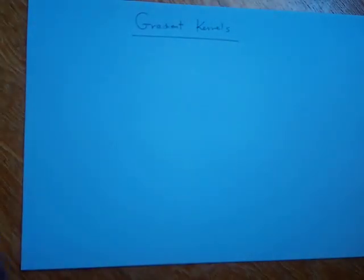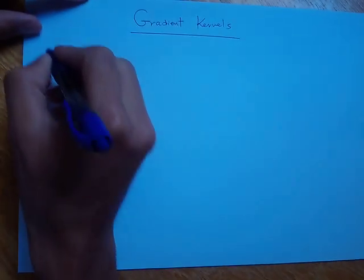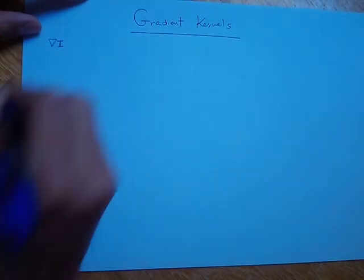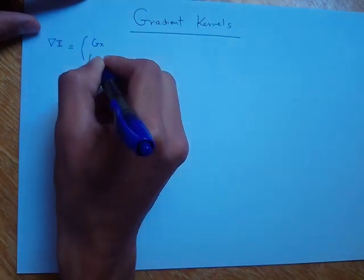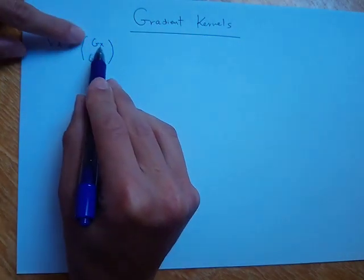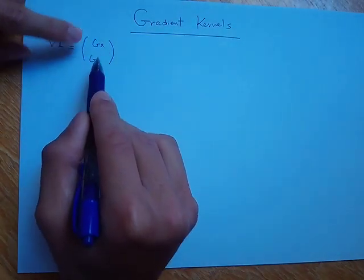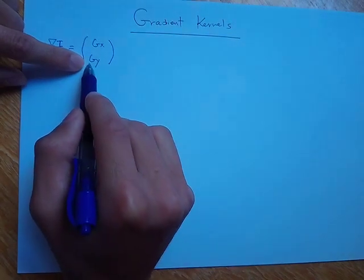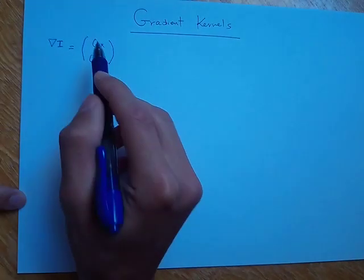Previously I talked about the importance of the gradient operation for edge detection. Now in this video I want to talk about some kernels we can use to approximate the gradient vector. The gradient of an image has two components: gx and gy, where gx is the partial derivative in the x direction and gy is the partial derivative in the y direction.